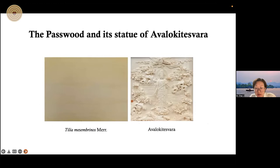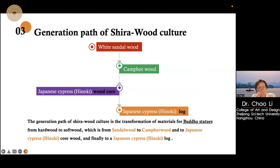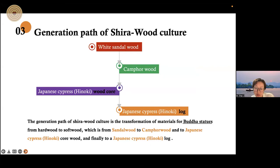Generally speaking, if one of the hardwoods has those three characteristics, it is also referred to as a Shirawood. For example, Paulownia and its status for Avalokitesvara — this kind of wood was used in many traditional Chinese crafts. For the third part, we want to talk about the generation path of Shirawood culture. As we can see in the roadmap in the figure, the generation path of Shirawood culture is the transformation of materials for Buddha statues, from hardwood to softwood — which is from sandalwood to camphorwood and to Japanese cypress log.